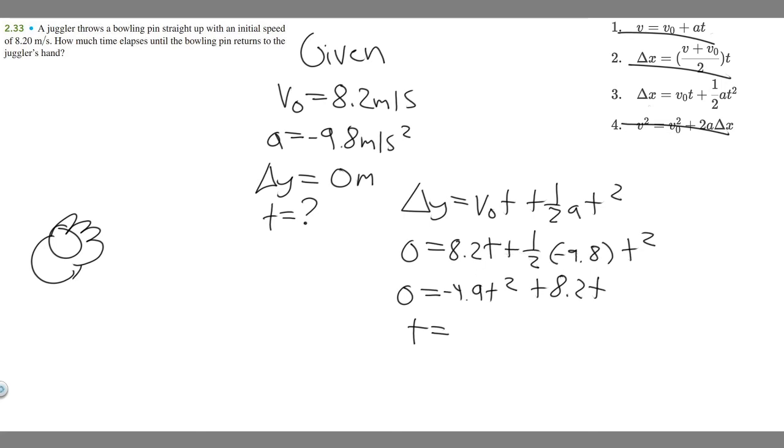So if you go ahead and do that, you're going to get two different values. You're going to get one, t equals zero, and t equals 1.6734, and so on.